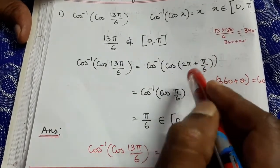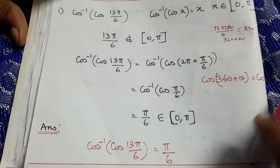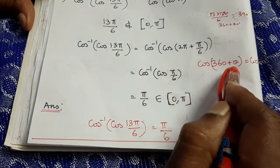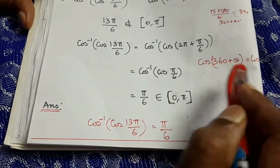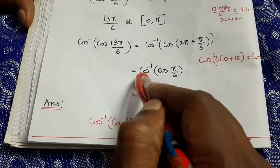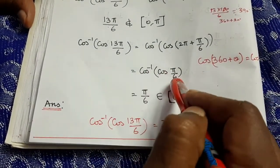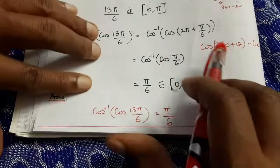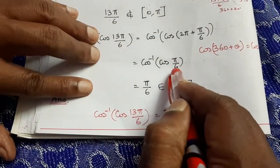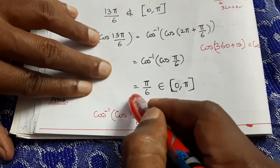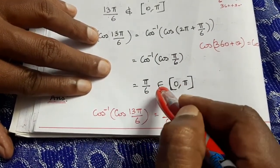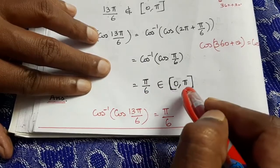Since cos(2π + θ) = cos θ, we get cos⁻¹(cos(π/6)). Therefore the answer is π/6, which belongs to [0, π]. So cos⁻¹(cos(13π/6)) = π/6.